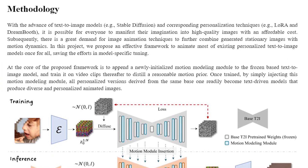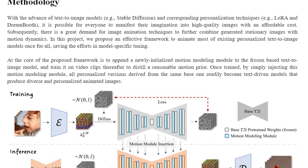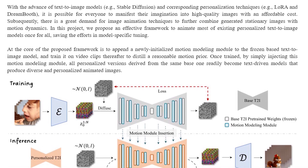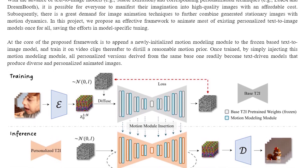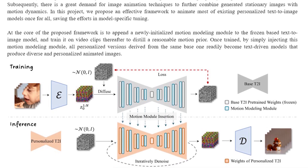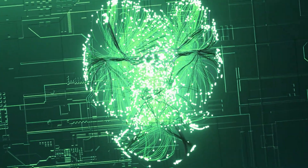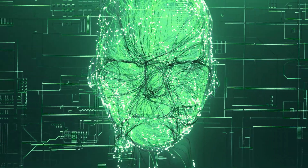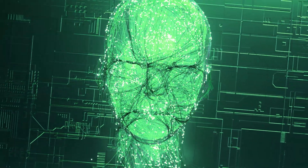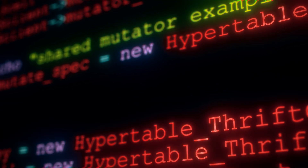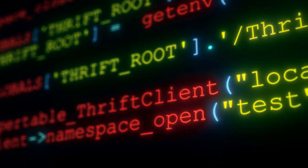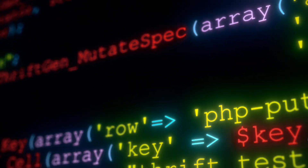In simple terms, this paper discusses AnimateDiff, a framework that extends personalized text-to-image models to generate animations without the need for specific tuning. The framework learns motion patterns from large video datasets and can be incorporated into personalized text-to-image models. These models could be either trained by the user or downloaded from platforms like Civit AI or Hugging Face.